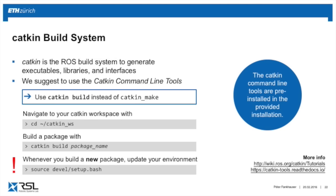To build a node, go to your Catkin workspace with cd and then navigate to the catkin_workspace. Then build a package with catkin build and the package name. Importantly, whenever you build a new package, your system must know about it — you have to resource your console. You can either open a new console, or type source, then the devel folder's setup.bash to scan your environment and make the system aware of your new package.